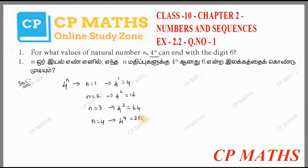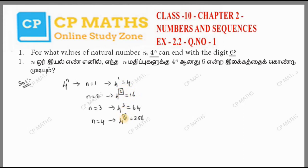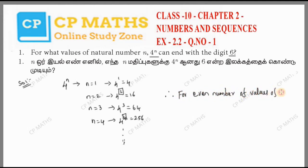So we have 4 values. We can see that even numbers end in 6 and odd numbers end in 4. So the pattern is: odd values of n give 4, even values of n give 6. Therefore, for even values of n, 4^n ends with digit 6.